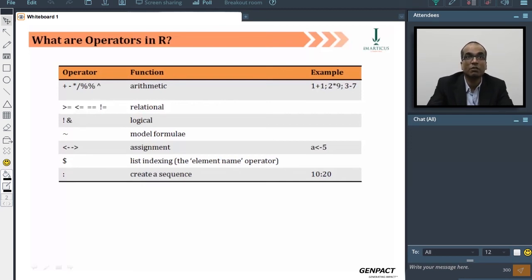From the relational perspective, there is greater than, equal to, less than, equal to, double equal to, and not equal to, which is shown with an exclamation and equal to mark. You cannot use something like what you use in SQL statements, like the less than and greater than sign as not equal to - that won't work in R.